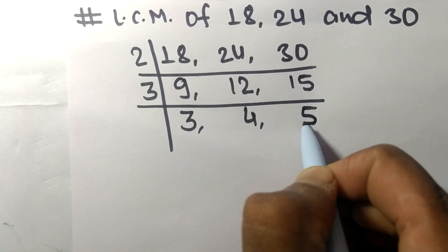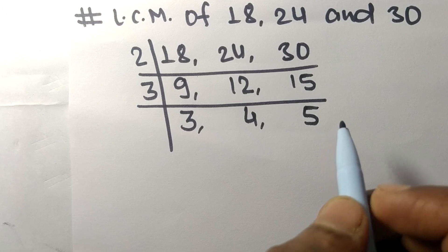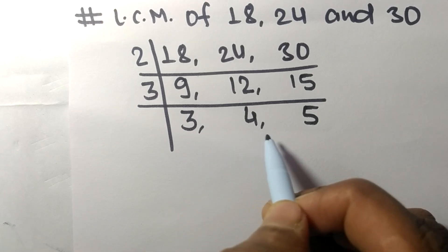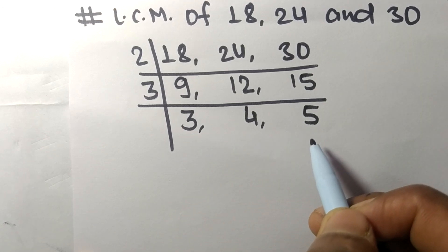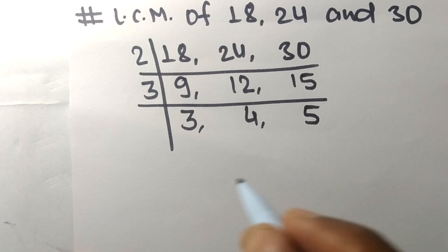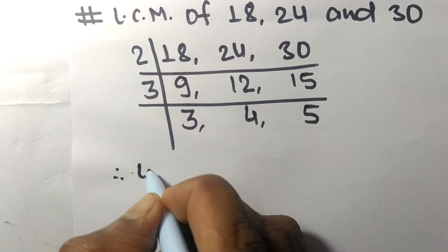Now 3, 4, and 5 are not divisible by the same number. Therefore, we stop the division here.